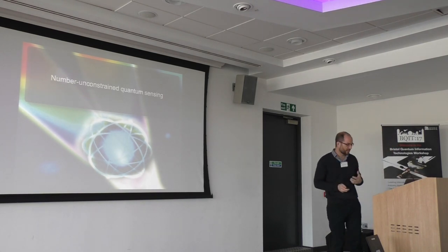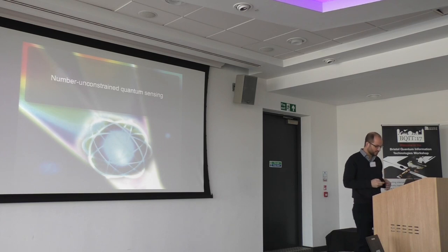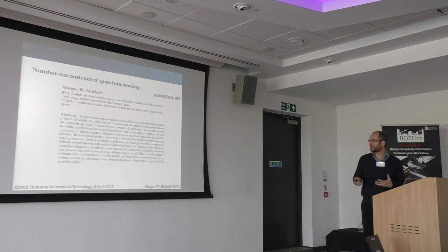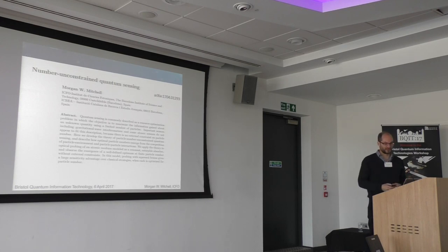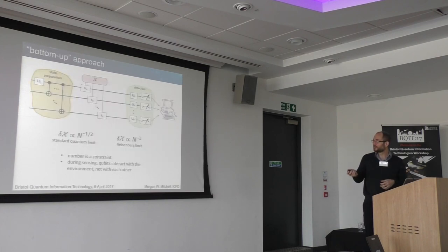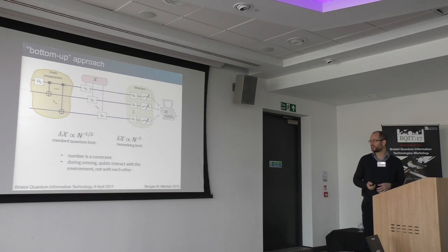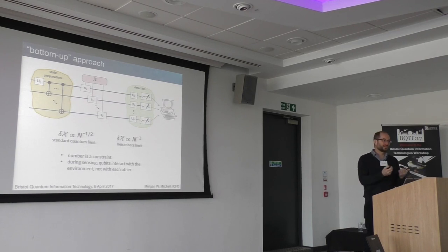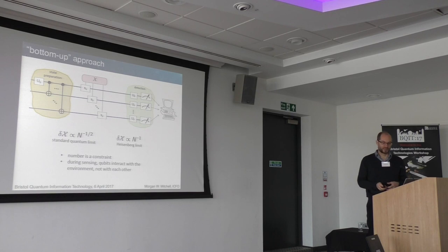The next topic is a bit more abstract and has more theoretical content. This is an essay I recently put on the archive, describing things which have been bothering me about quantum sensing for many years that I finally figured out. The standard model of quantum sensing assumes that the number of particles is a constant — you start with a certain number of qubits and do what you can do with them. It also assumes that the thing you're trying to estimate is interacting with each of the elements, but the elements are not interacting with each other.